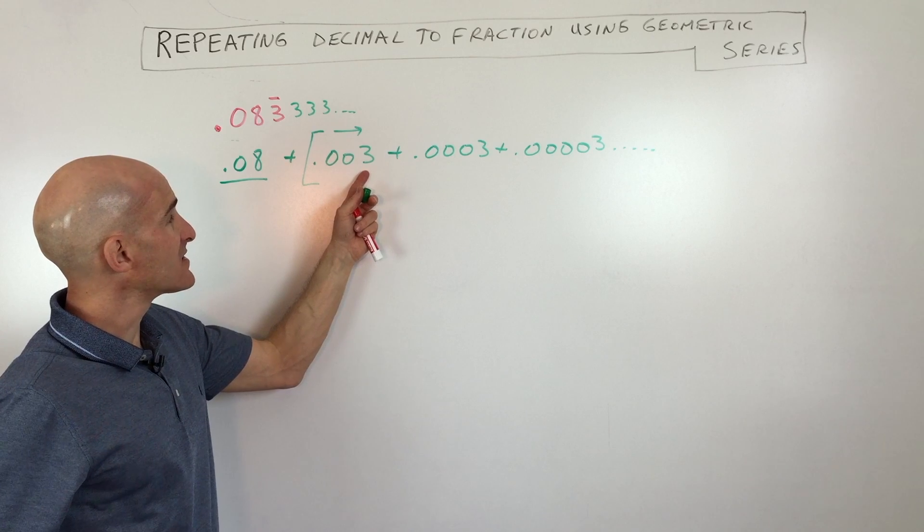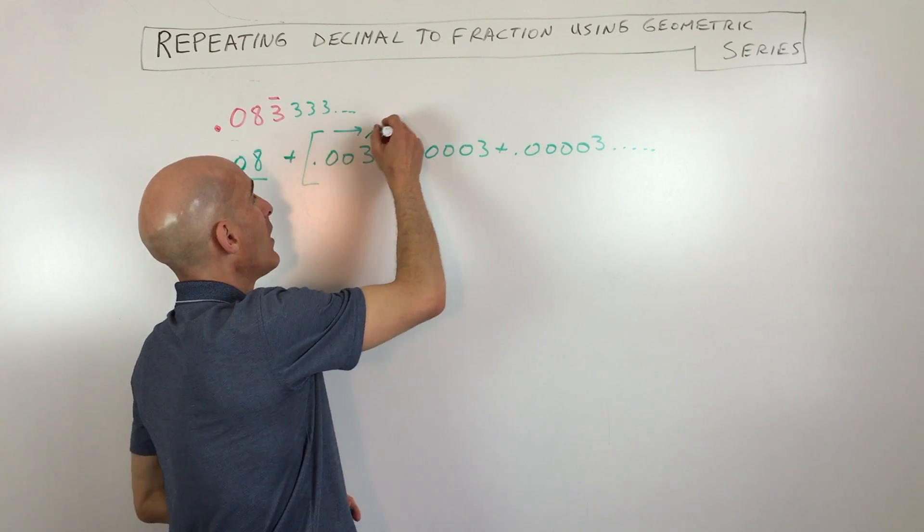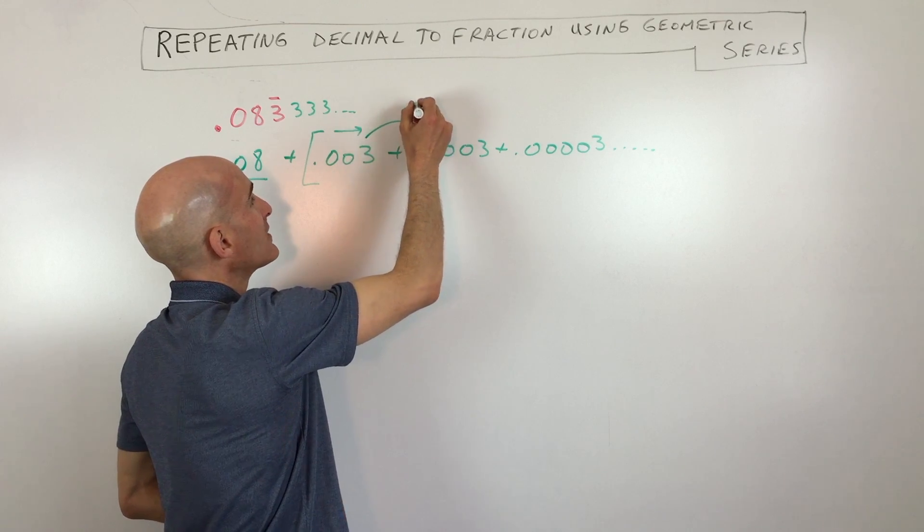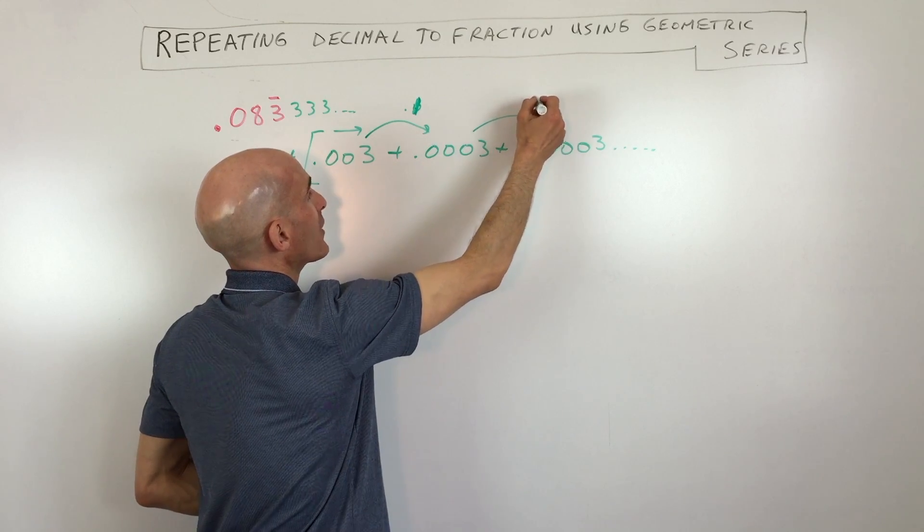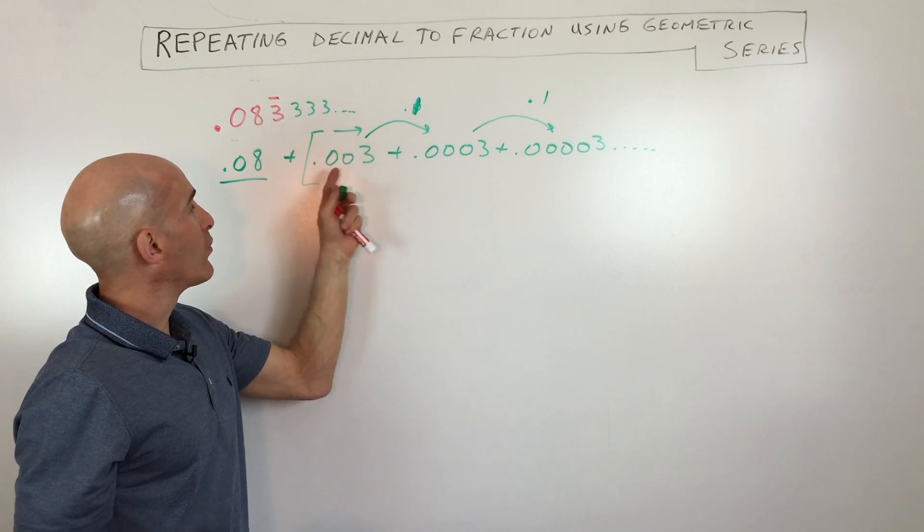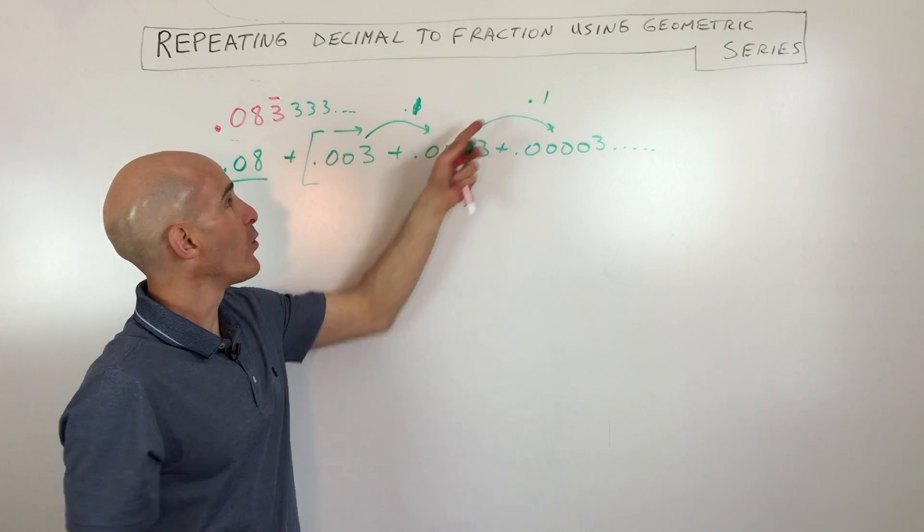So what you can see is that each time, what are we doing to get to the next term? Well, we're multiplying by 0.1. And the next term, same thing, we're multiplying by 0.1. So whenever you move that decimal point one to the left, that's like dividing by 10, that's one tenth, which is 0.1.